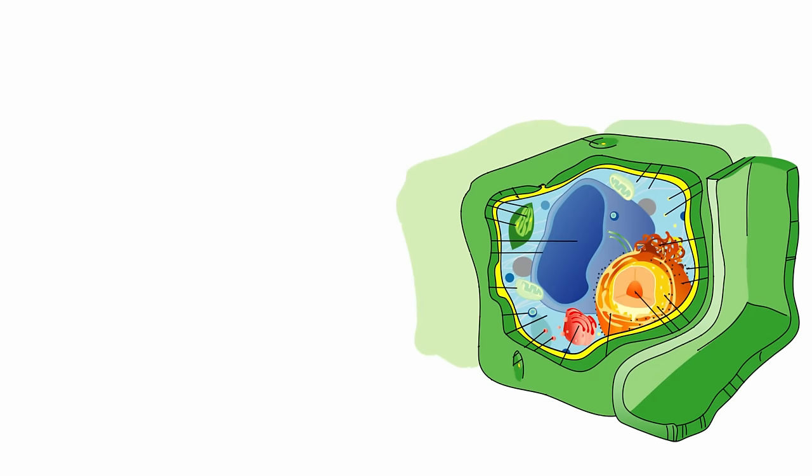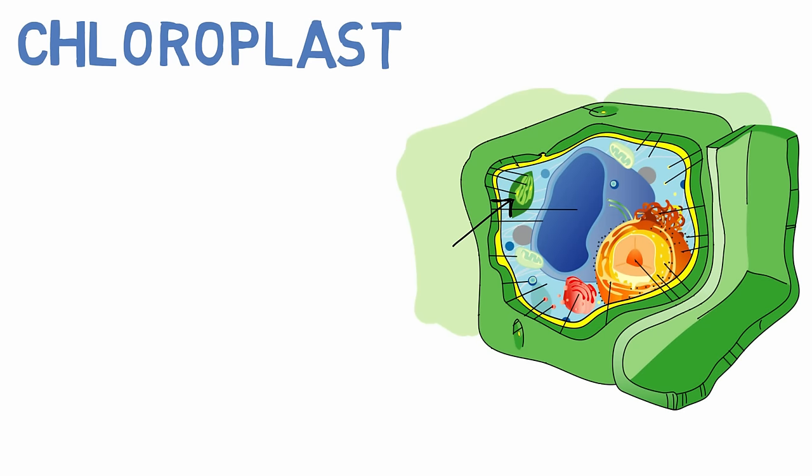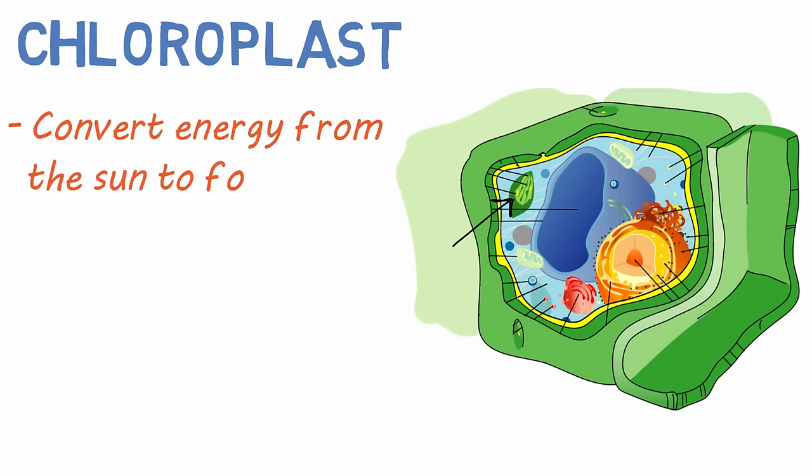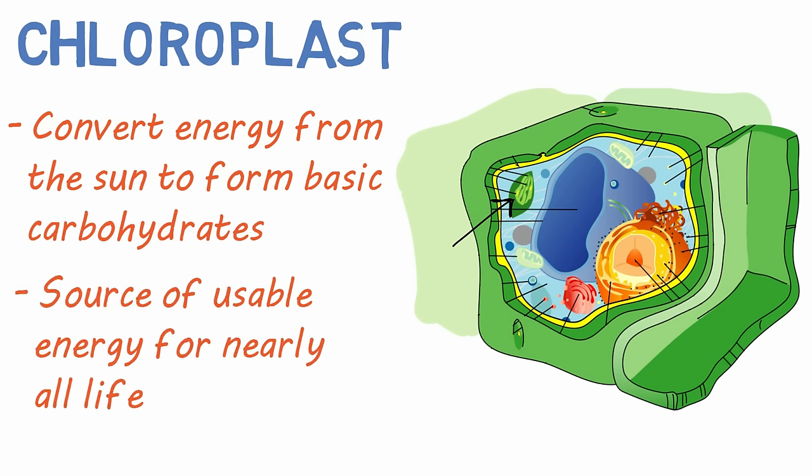Similar to the mitochondria is the chloroplast. I say similar, but chloroplasts really work in an opposite manner. They convert energy from sunlight and use it to form basic carbohydrate compounds. This is really the source of usable energy for nearly all living organisms.